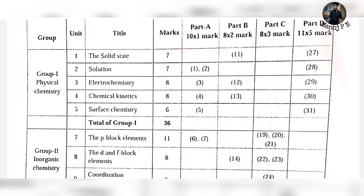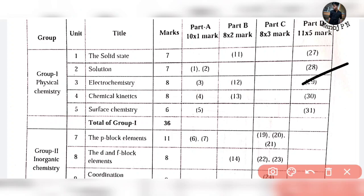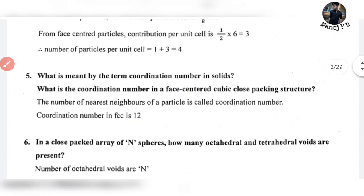Hey guys, welcome back to another video. In the chemistry passing package we discuss the physical chemistry chapter on solid state, solutions, and electrochemistry, which is a very easy chapter carrying 8 marks in your examination — question number 3 (part B), question number 12, and question number 29. That's 5 plus 2 plus 1, which is 8 marks.